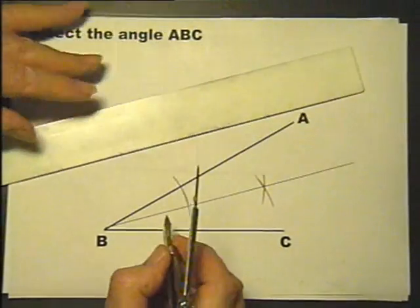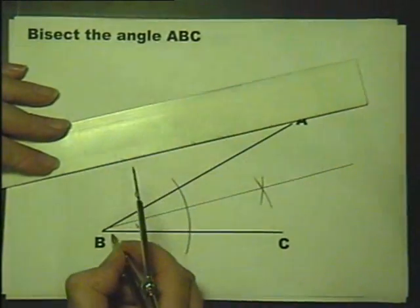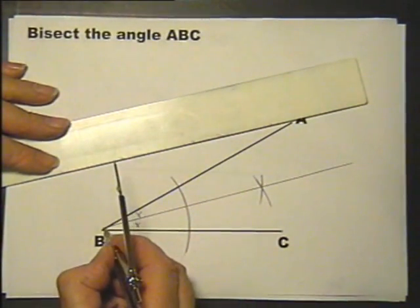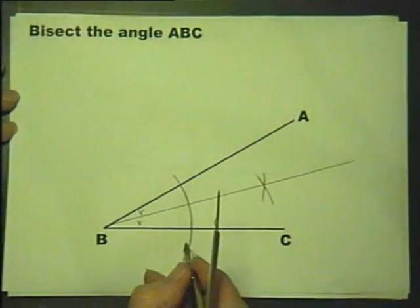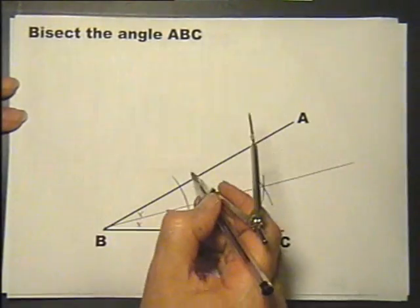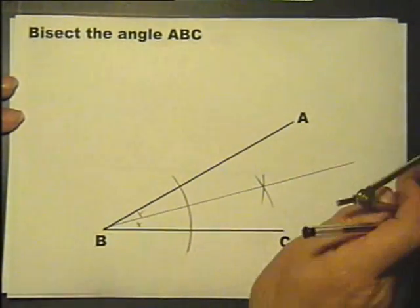If you measured it you'll find that bit the same size as that. I've not done that terribly accurately, that should have gone through there so it's a little bit out. But there you go, I'd get four marks because the examiner can see my construction and that's what he's after seeing.